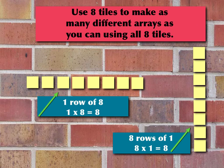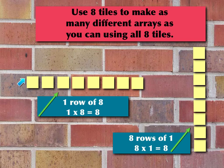Let's look at arrays a little bit differently. We're going to use eight tiles to make as many different arrays as possible, and we have to use all eight tiles every time. Let's look at the first way: we took the eight tiles and put them into one row — one, two, three, four, five, six, seven, eight. So we've got eight tiles in this row and one row. That gives us one row of eight, equal to one times eight, because we have one row times eight tiles, and that equals eight.